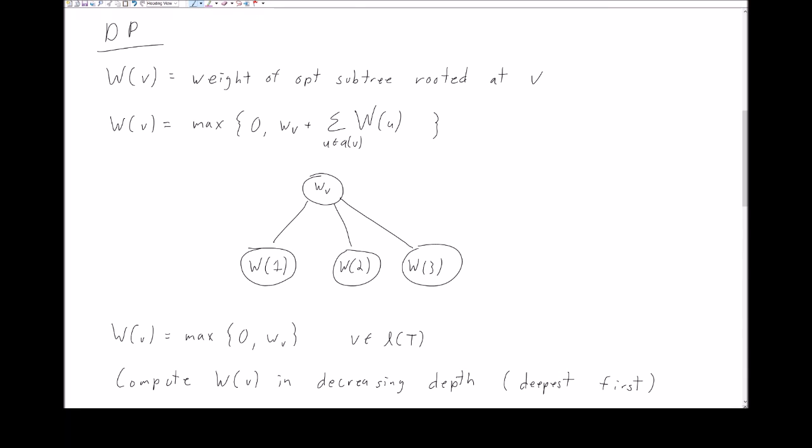In this case, our subproblems are going to be the weight of the optimal subtree rooted at node V. It's as if we're pretending that every node in our tree becomes a root and we solve the problem at that root. We denote W(V) as the weight of the optimal subtree rooted at V.